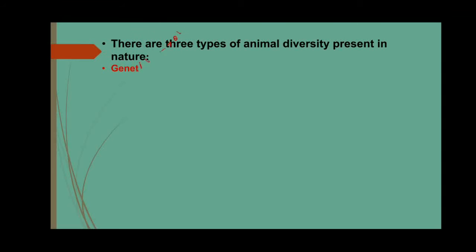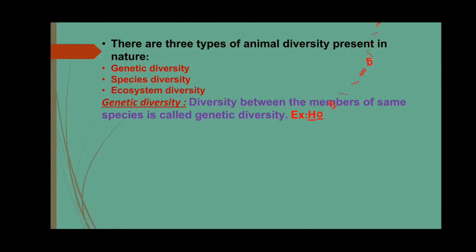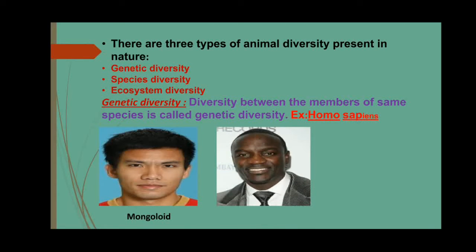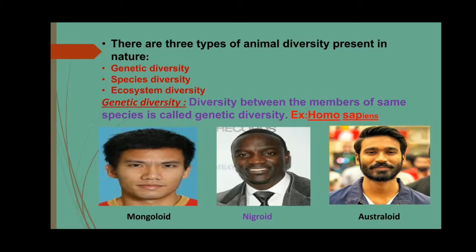There are three types of animal diversity present in nature. Number one: genetic diversity. Number two: species diversity. Number three: ecosystem diversity. Genetic diversity is the diversity between the members of the same species, for example Homo sapiens. Genetic diversity is also known as intraspecific diversity. You can see on the screen three members of Homo sapiens, but all of them are not the same in appearance and characteristics, only because of genetic diversity.